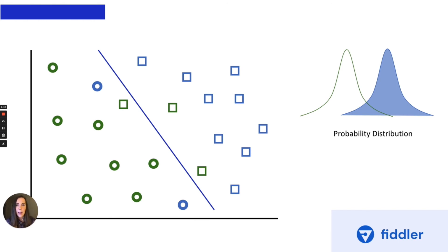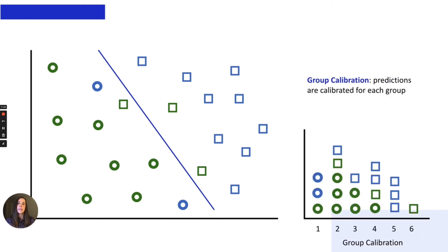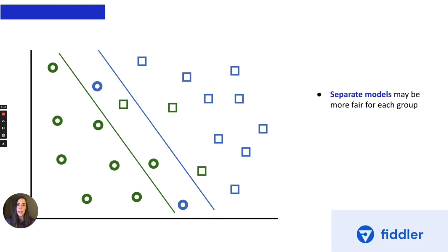Recall, aggregation bias happens when incorrect conclusions are drawn for a subgroup — in our case, the green group — based on false assumptions about the population. The blue and the green group have very different probability distributions for their HbA1c levels, and using a single threshold for these two groups would lead to poor health outcomes. This leads us to a machine learning best practice: make sure your predictions are calibrated for each group. Correctly calibrated probability means that the probability reflects the likelihood of true events. If your scores aren't calibrated for each group, you're likely systematically over- or underestimating the probability of the outcome for one of your groups. One could decide that each group should get its own decision boundary, which is more fair than a single threshold — especially when addressing systemic or historical bias.